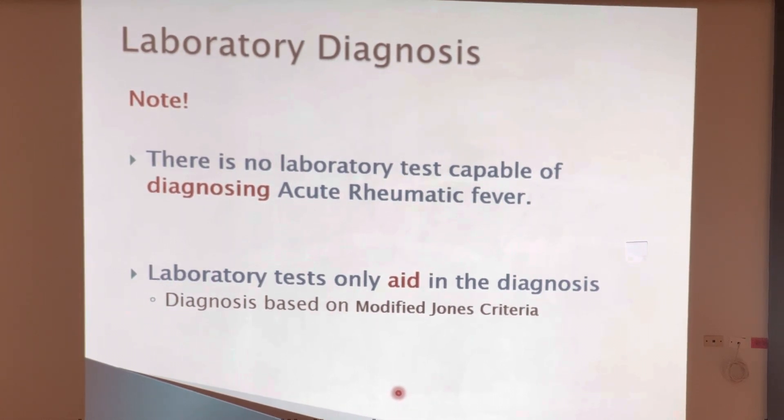If there are no antibodies to streptolysin O in the patient's serum sample, when we add streptolysin O there's nothing to neutralize it. So streptolysin O remains free in the serum. When we add the red cells, the streptolysin O will lyse them. The endpoint of a negative test — no antibodies present — is hemolysis. The endpoint of a positive test — antibodies present — is a button, or no lysis.